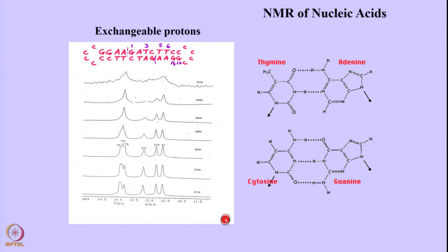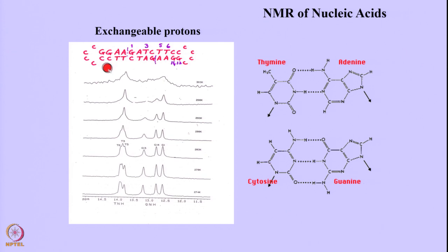In D2O these ones exchange out. Consider this particular sequence: GATCTTCCCCCCCGGGA — this sequence has two molecules forming the stem of a duplex and then forming a loop. The C's in the loop will not be observable because they exchange out with water, and this forms a symmetrical duplex with Watson-Crick base pairs of thymine-adenine and cytosine-guanine.